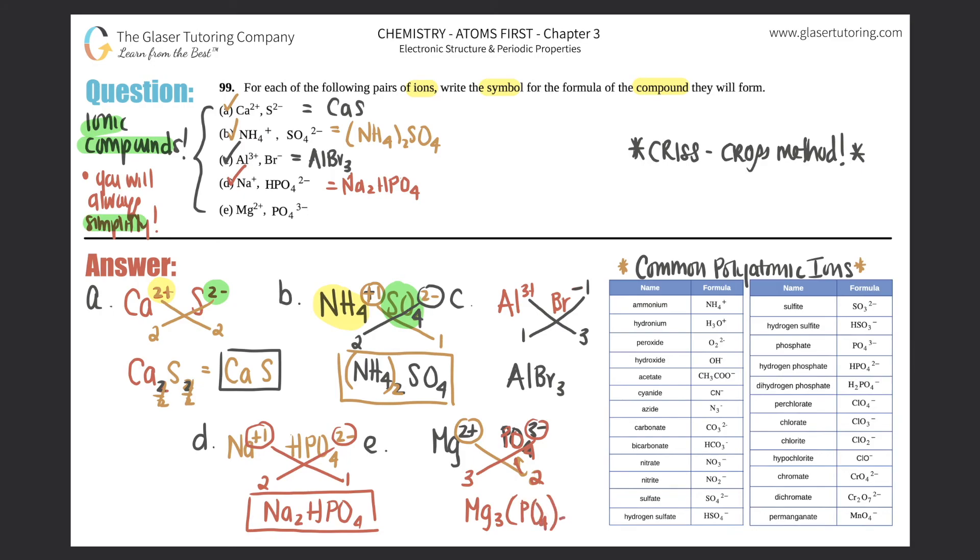Three and two - I just make sure this is simplified, and yes it is. You can't divide three and two, there's no number that's divisible with them. So that's your final answer: Mg₃(PO₄)₂. Check that off, and that's the end for this one.